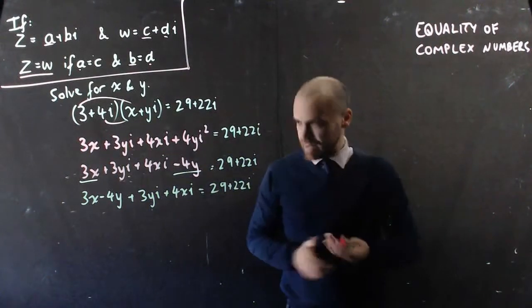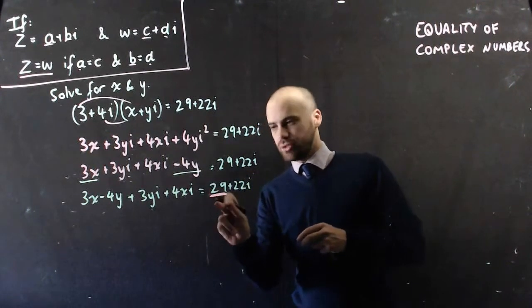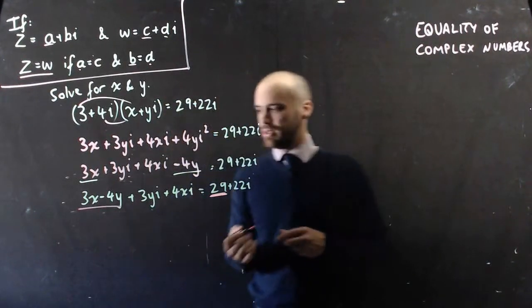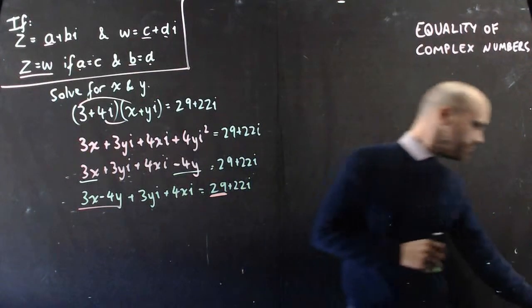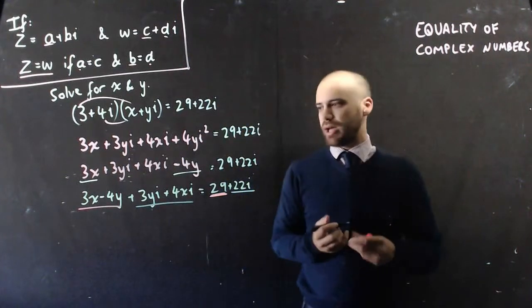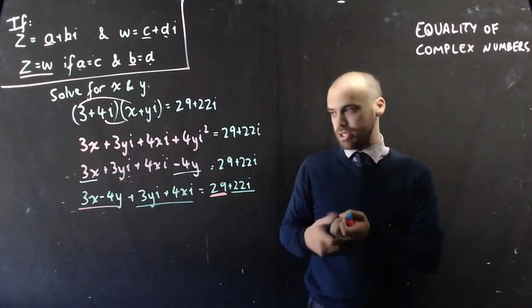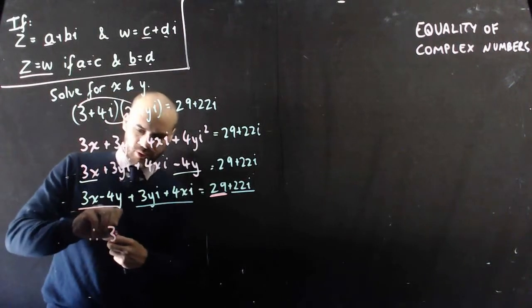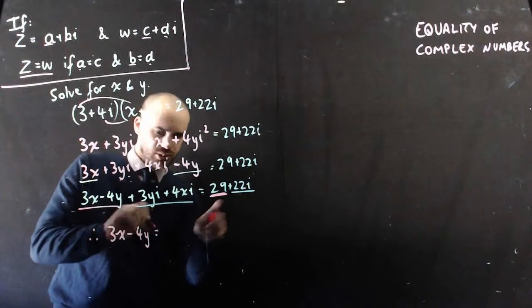What does that mean? Well, the real component, 29, has to equal that. And the imaginary component has to equal that. Which means, and you should be able to see this, I've got two equations now. I can do therefore, 3x - 4y = 29.